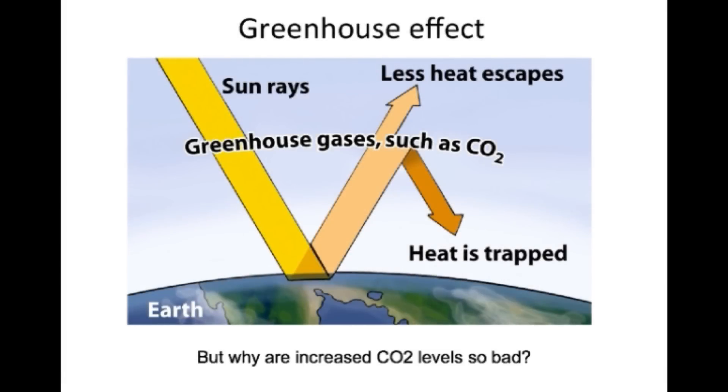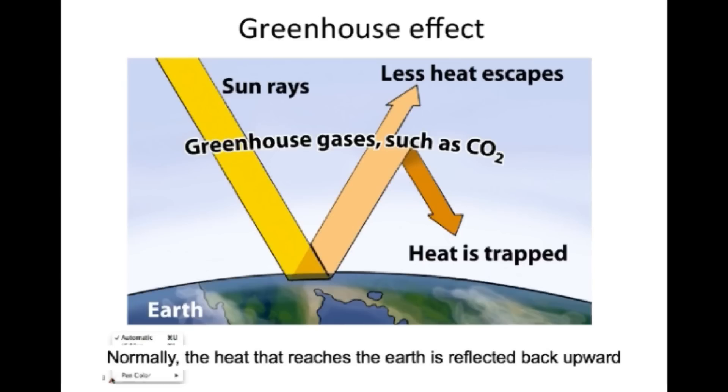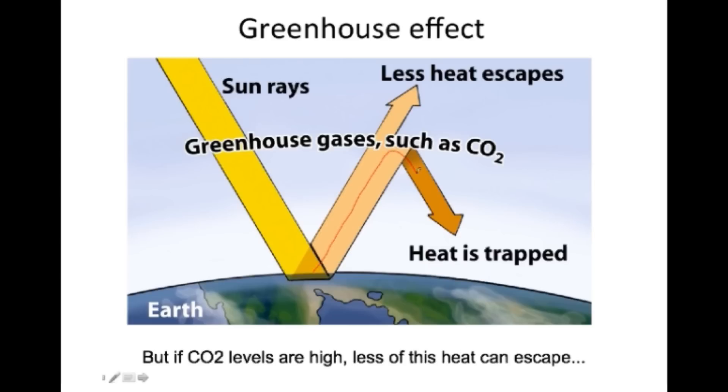But why are increased CO2 levels so bad? Well, it turns out that CO2 is a greenhouse gas, a gas that can block heat from escaping the Earth's surface. Normally, the heat that reaches the Earth is reflected back upward and leaves the Earth's atmosphere. But if CO2 levels are high, less of this heat can escape, and the heat becomes trapped. This causes the Earth's temperature to increase, a phenomenon known as global warming.